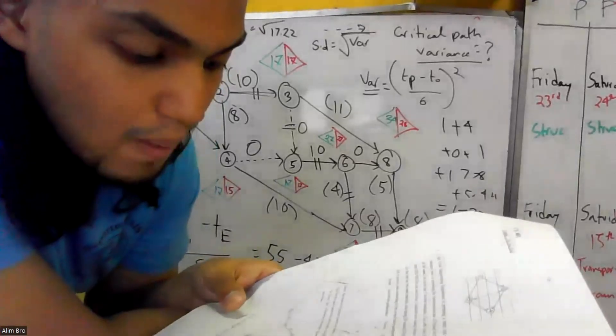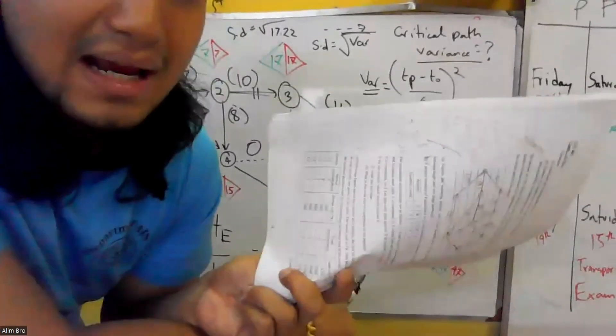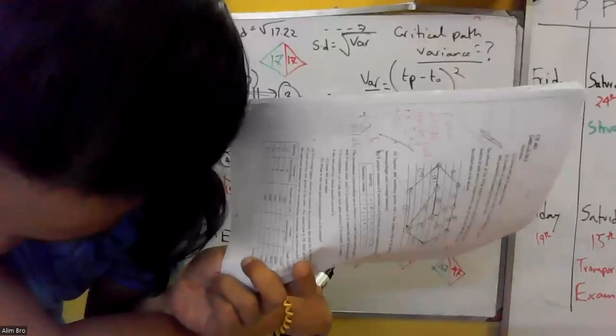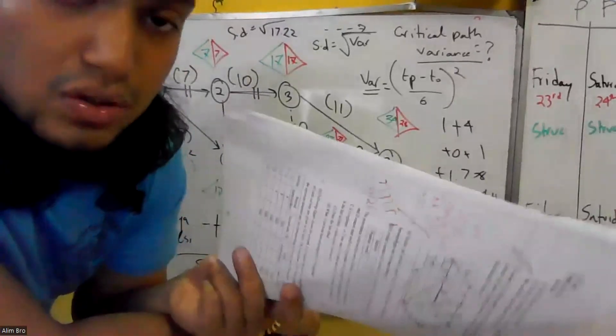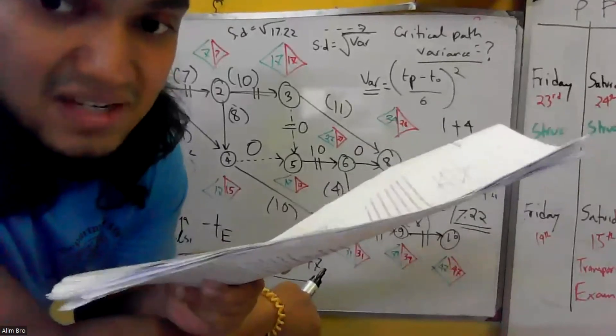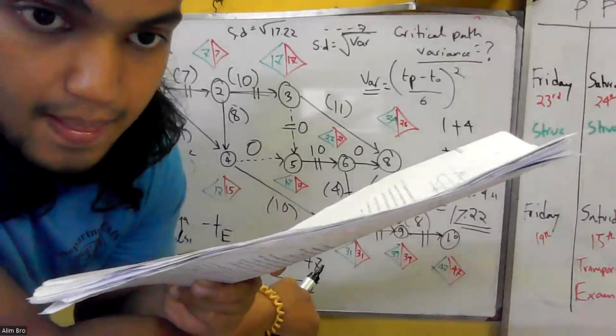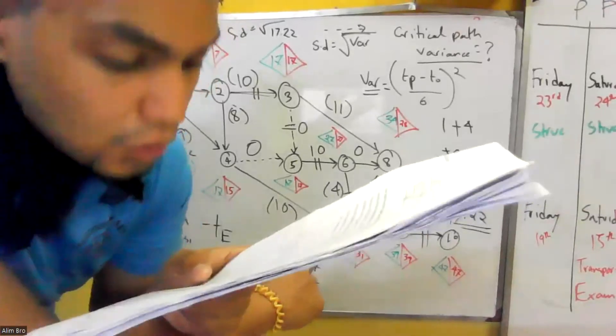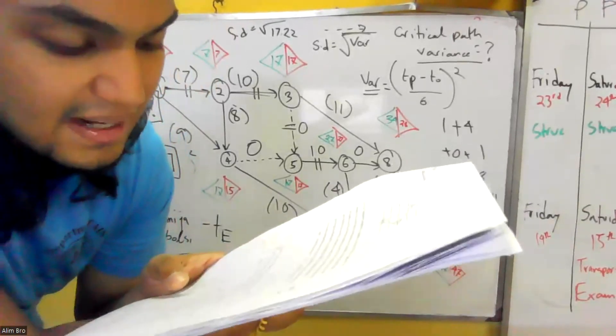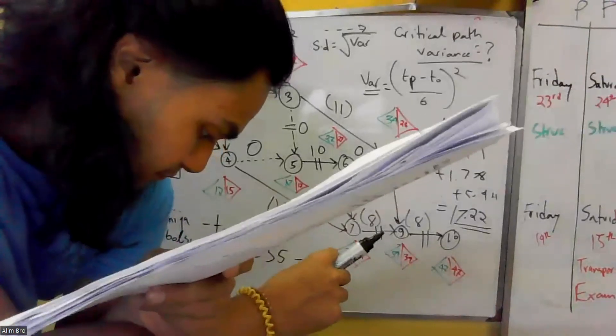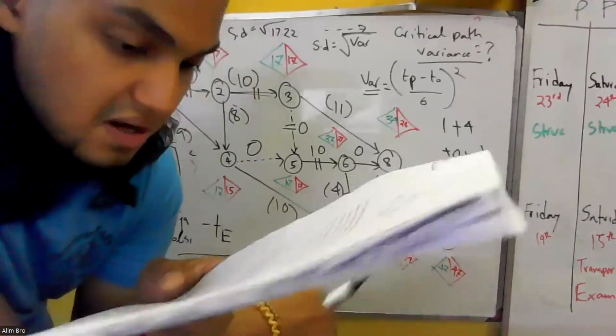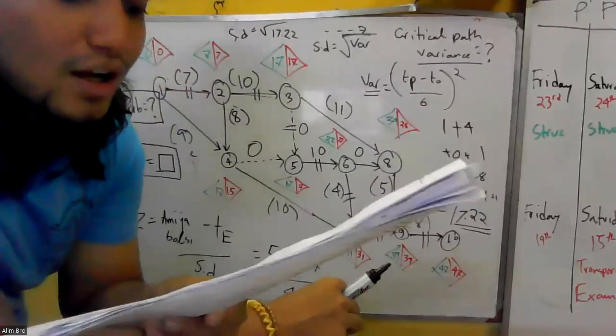One, two, two, three. One, two, three. A is the initial activity, is the first activity.